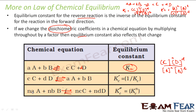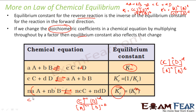If the coefficients are multiplied by n in both forward and backward reactions, then K'c becomes Kc to the power n. Logically, the numerator becomes [C]^(nc) × [D]^(nd) and the denominator becomes [A]^(na) × [B]^(nb). Taking n as a common power gives us ([C]^c × [D]^d / [A]^a × [B]^b)^n, which is Kc to the power n.